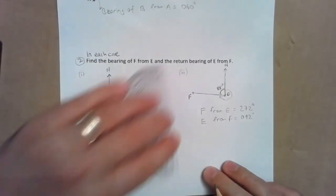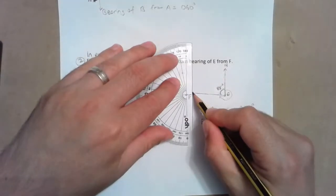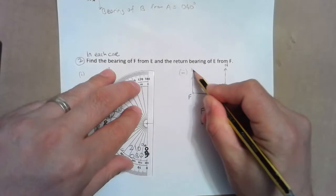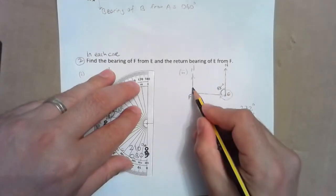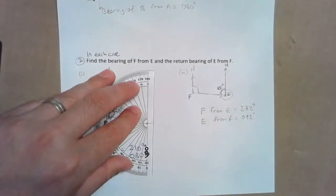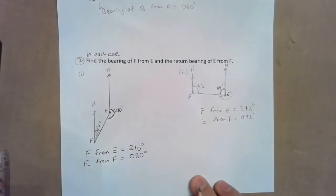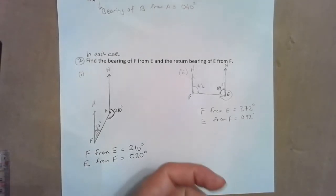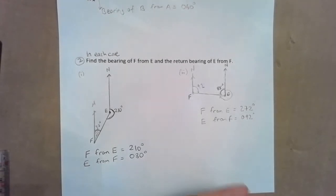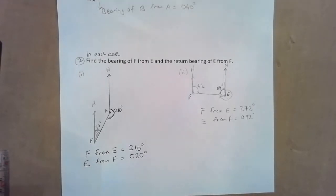For the return bearing, E from F, it's going to be 180 degrees less, which is 92 degrees or 092 as a bearing. What that means is: start at F, face north, turn clockwise until facing E — that turn is 92 degrees. Remember: bearings are measured from north, clockwise, as three figures.